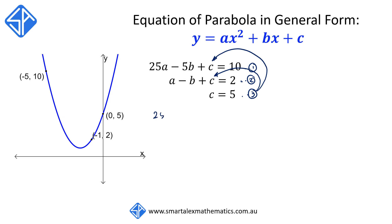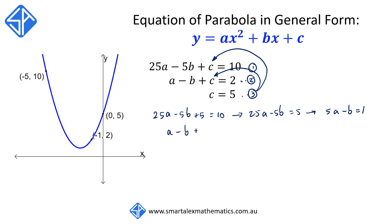Substituting c = 5 into equation 1 gives us 25a minus 5b plus 5 is equal to 10. This simplifies to 25a minus 5b is equal to 5. We then divide both sides by 5, which gives us 5a minus b is equal to 1. When we substitute c is equal to 5 into the second equation, we get a minus b plus 5 is equal to 2, and this simplifies to a minus b is equal to negative 3.